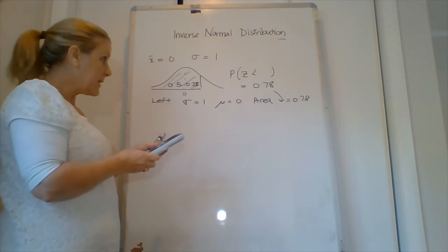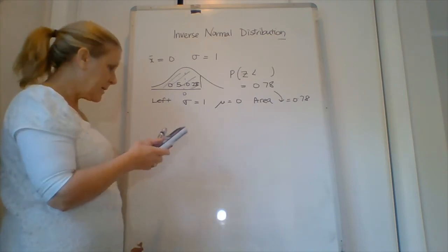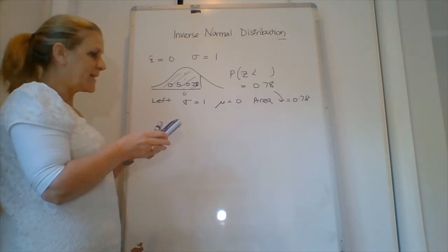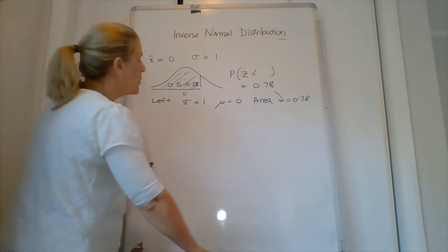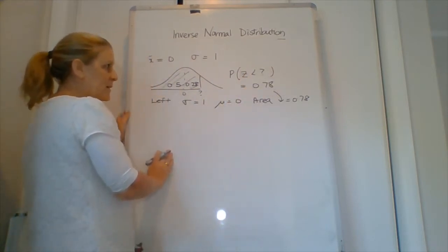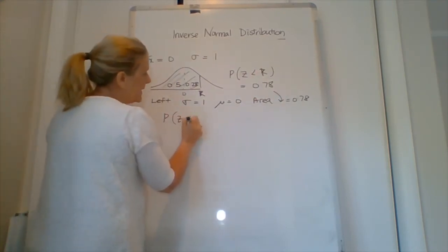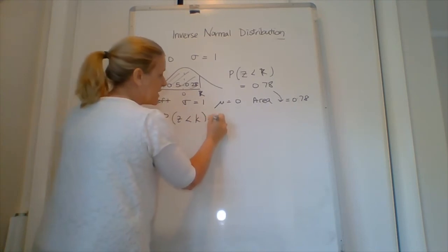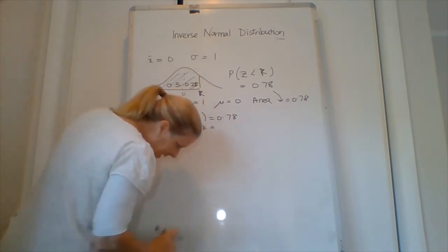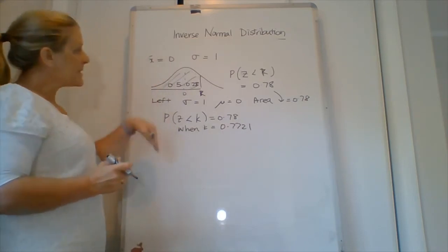Left tail, area is 0.78. Standard deviation is 1, mean is 0. What have we got? 0.77. So this number here that we're trying to find, we'll call it k. So the probability of z being less than k equals 0.78 when k equals, and we read it off our calculator, 0.7721. That's a standardized case.